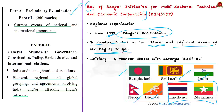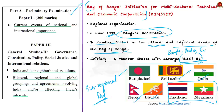BIMSTEC could also be called a sub-regional organization. Initially it was envisaged as an economic bloc with four member states only, with the acronym BIST-EC — where BIST stood for Bangladesh, India, Sri Lanka, and Thailand, and EC for Economic Cooperation. Later, Myanmar, Nepal, and Bhutan joined, leading to the change in name to Bay of Bengal Initiative for Multisectoral Technical and Economic Cooperation. So note that before, 'B' stood for Bangladesh, but now 'B' stands for Bay of Bengal.